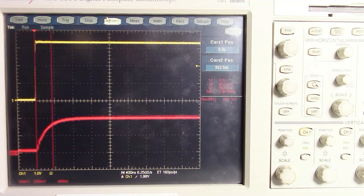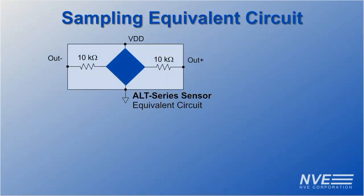ALT series sensors have a device resistance of 20 kilo-ohms, so each output's impedance is 10 kilo-ohms. The sensor output capacitance is negligible, so sampling speed is limited by the input capacitance of the amplifier or the sample-and-hold capacitor of the ADC.